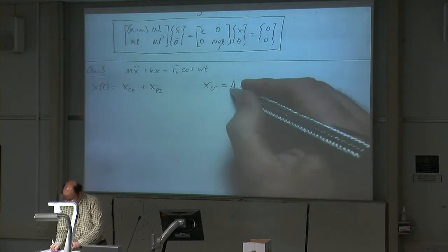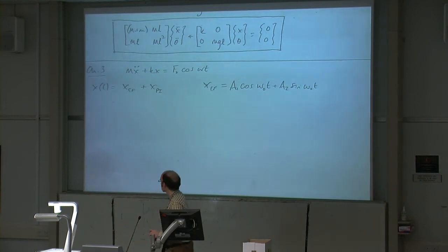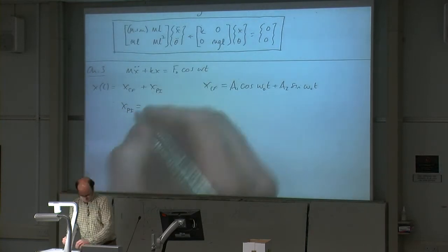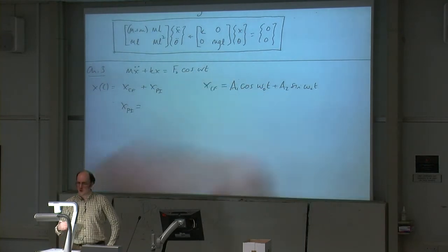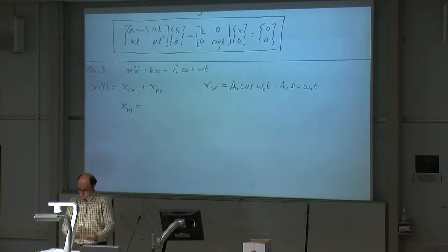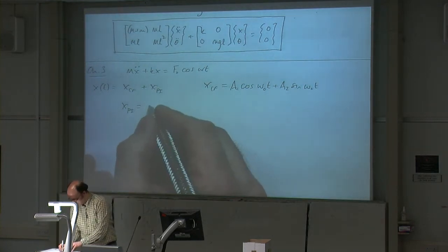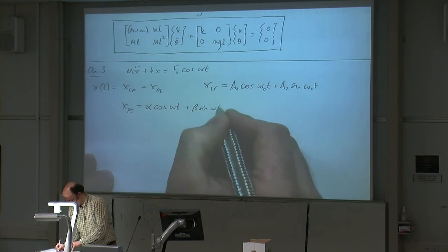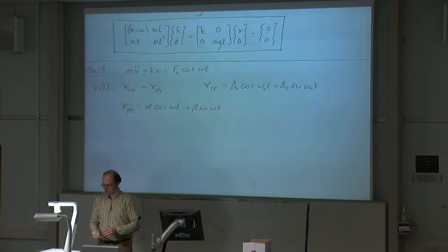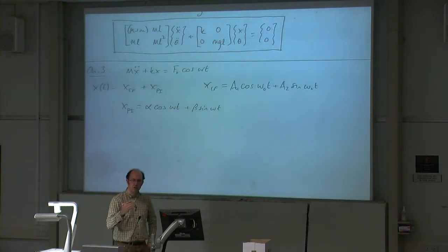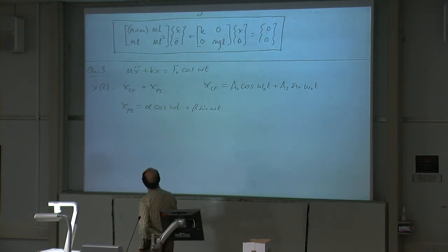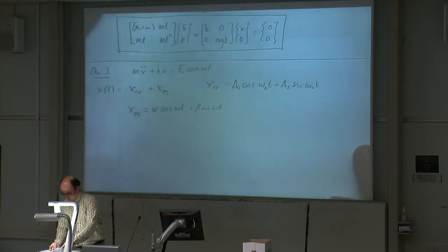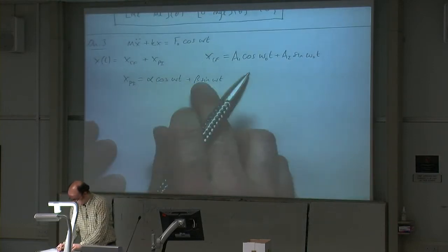Where a1 and a2 are determined from your initial conditions. xpi is a bit more complicated. We've got a sinusoidal forcing function, so the trial function has to be a sinusoid as well. But we don't know whether it's a sine or cosine, so we use the term alpha cosine omega t plus beta sine omega t, where alpha and beta we will find. And omega here is not omega-naught — omega is the frequency of the force being applied, not the natural frequency. Omega-naught is the natural frequency.